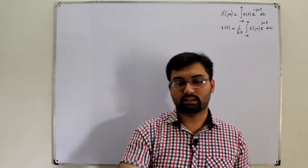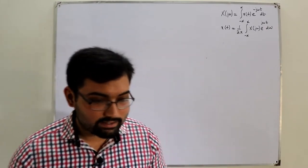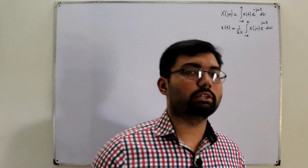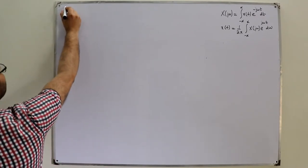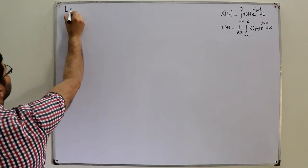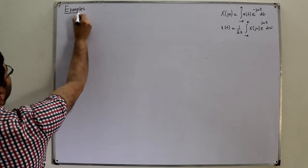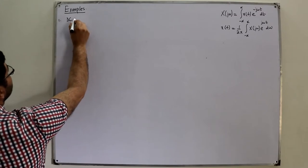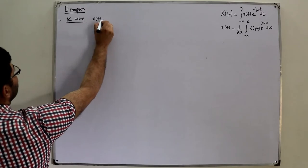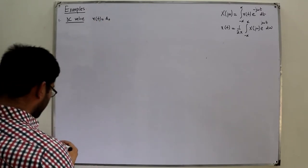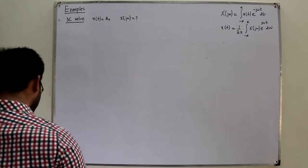Bismillah ar-Rahman ar-Rahim. Assalamu alaikum. Salah Al-Khan here, and today we discuss some basic examples on the Fourier transform. Let's say we discuss two or three. The first example I take is a DC value, which means my X of T is equal to A naught. We have to find the Fourier transform of this.